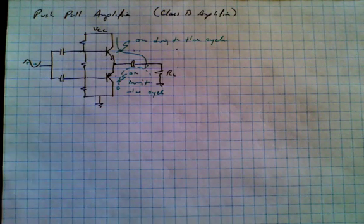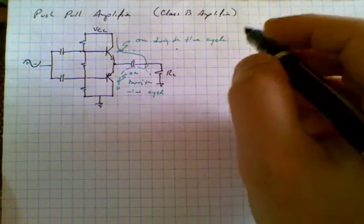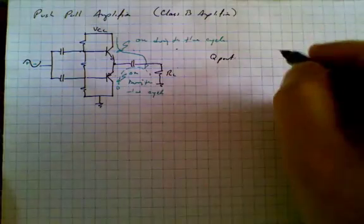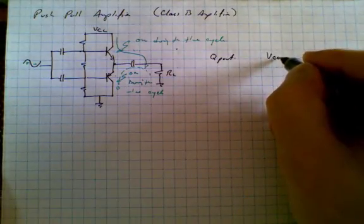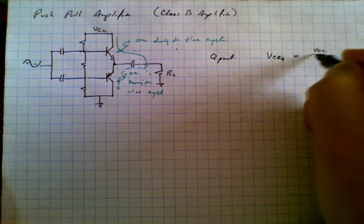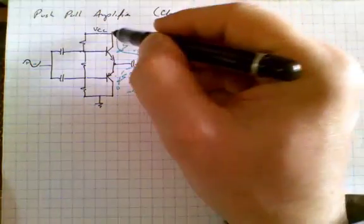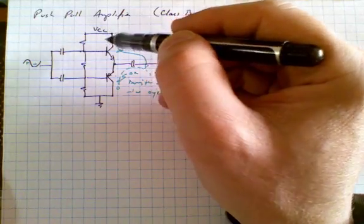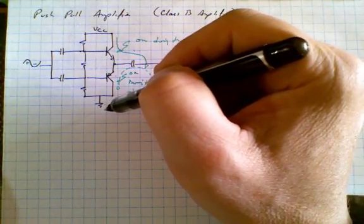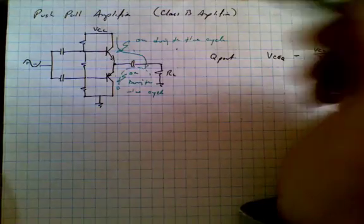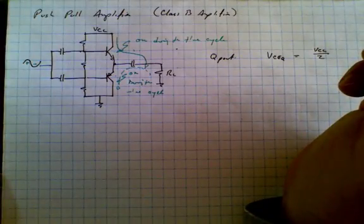One thing which should be fairly evident is that the Q point, the Q point of the circuit, that the voltage collector to emitter is equal to VCC divided by 2, half the supply voltage. If this was VCC and this is VEE, something of equal value, then the Q point would be at one of the supply values.